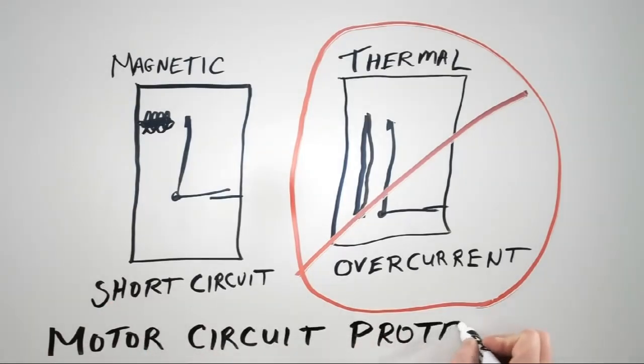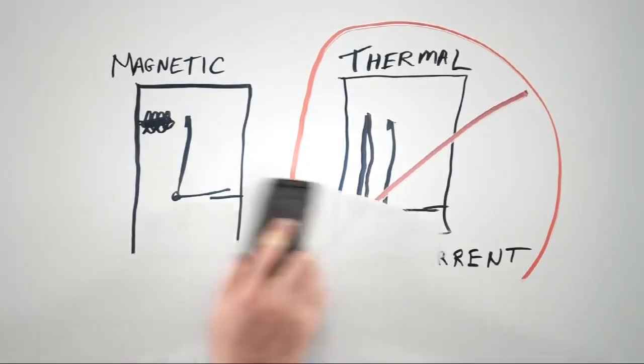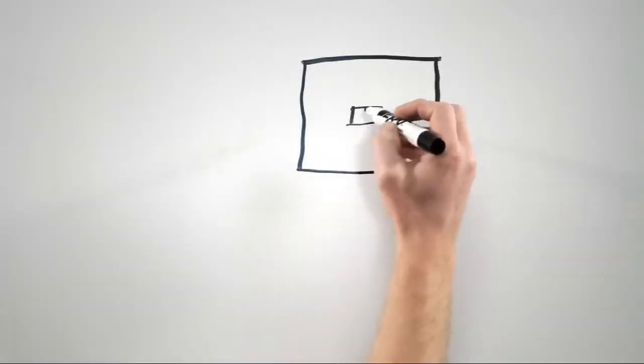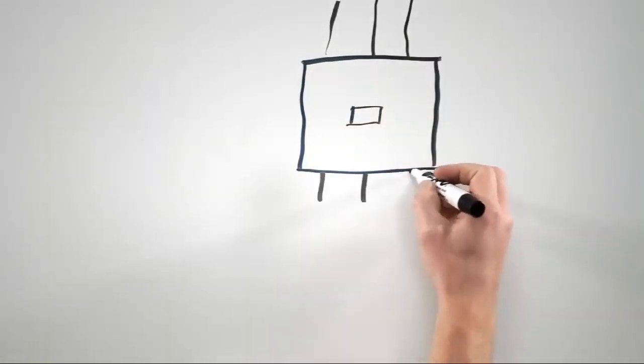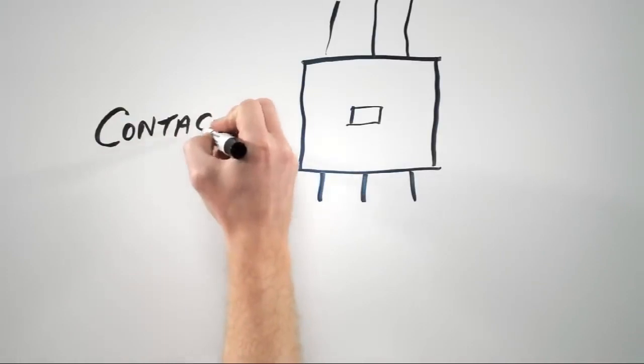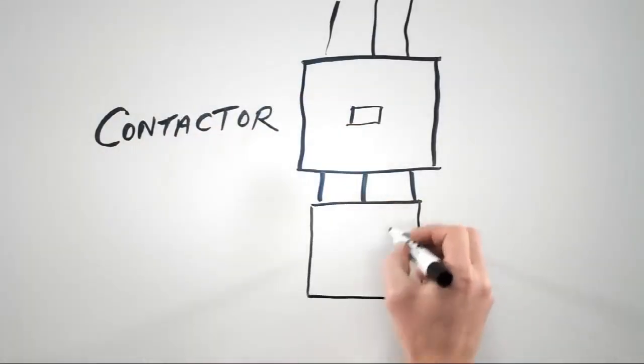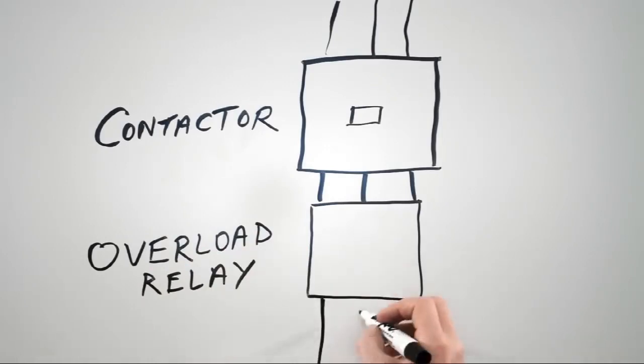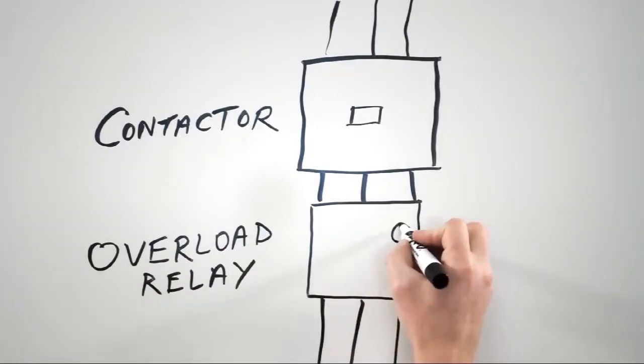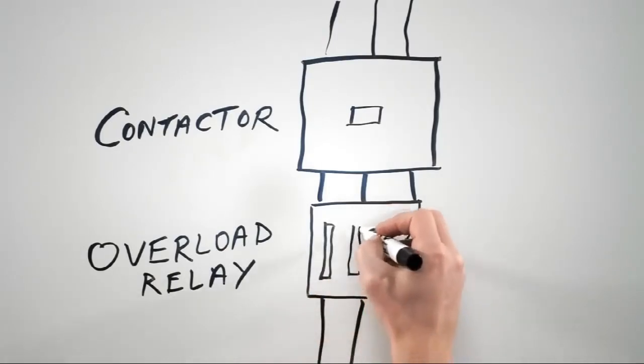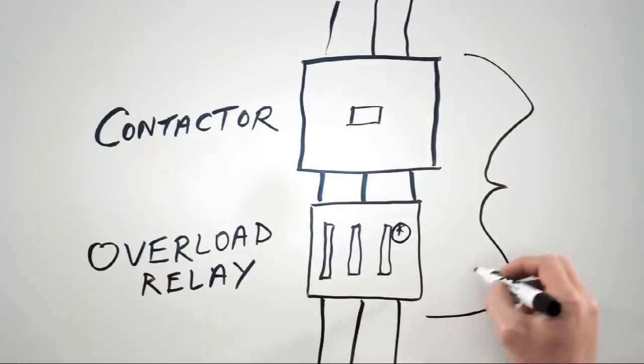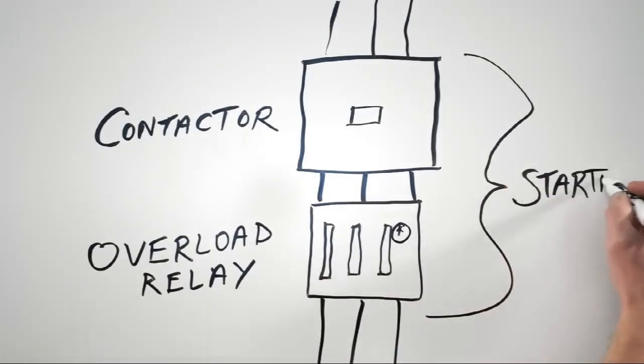Frequently you'll see Eaton's version called an HMCP, with the H standing for High Interrupting. So, if we get rid of the over current protection provided by the molded case breaker, we still need to find a way to protect the motor from an overload condition. Here we've got a contactor with our power coming in the top and out the bottom. But now let's add a new component to the contactor. This is called an Overload Relay. The Overload Relay has three bimetal strips inside that are designed to heat up at the same rate as the windings of the motor. This is different from the bimetals inside the breaker, because those bimetals didn't know to ignore the inrush when you start the motor. When you pair an Overload Relay with a contactor, we call this a starter.